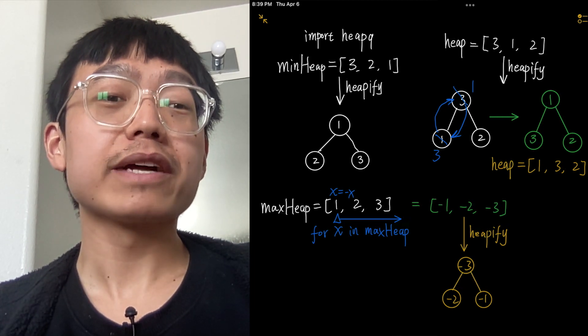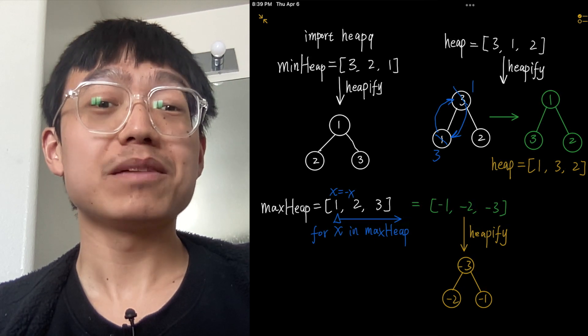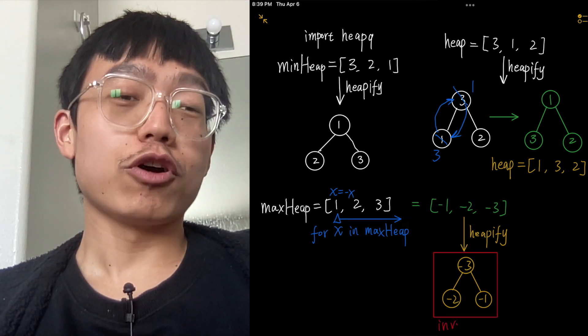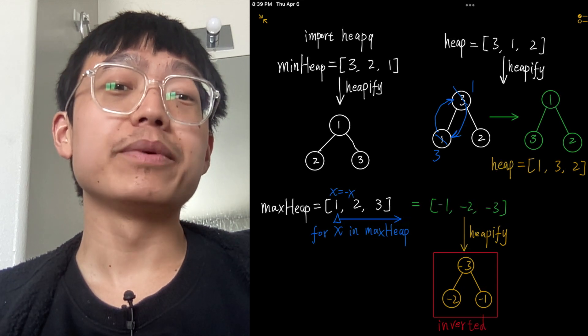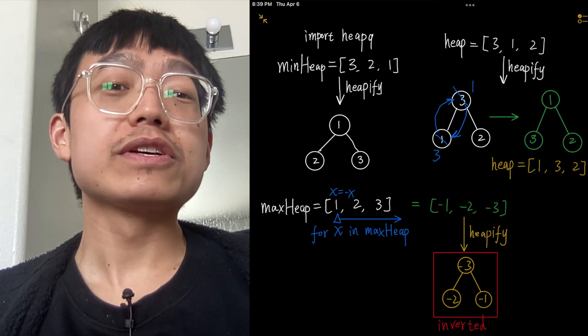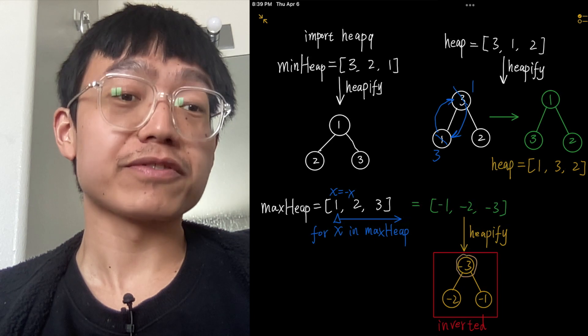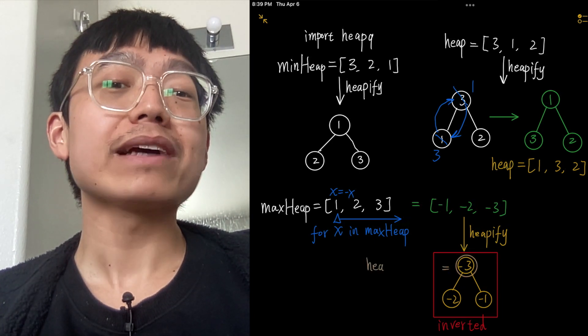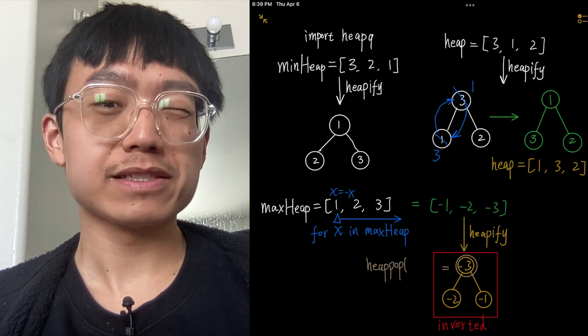This minimum heap will have the elements [-3, -2, -1]. The top element of the modified minimum heap is -3, which is the smallest element in the modified set. We multiply the top element by -1 again to get the maximum value from the original list.